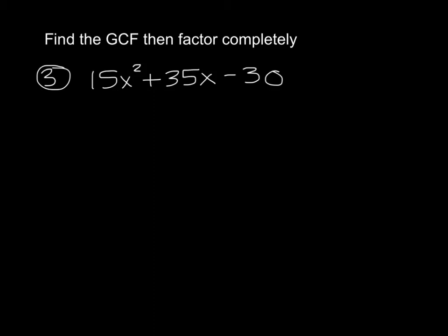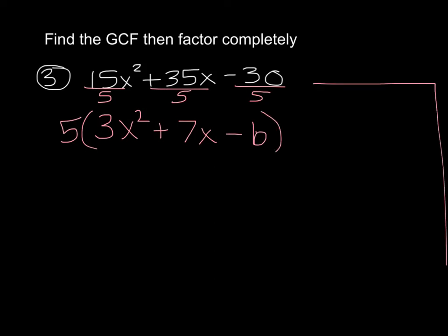Last one here. We look at 15, 35, and negative 30. So we're looking for a GCF first. And they all 3 divide by 5. So that means my greatest common factor is 5. So I'm dividing everything by 5 here. And in the parenthesis I'll get 15 divided by 5 is 3x², 35 divided by 5 is 7x, 30 divided by 5 is 6.